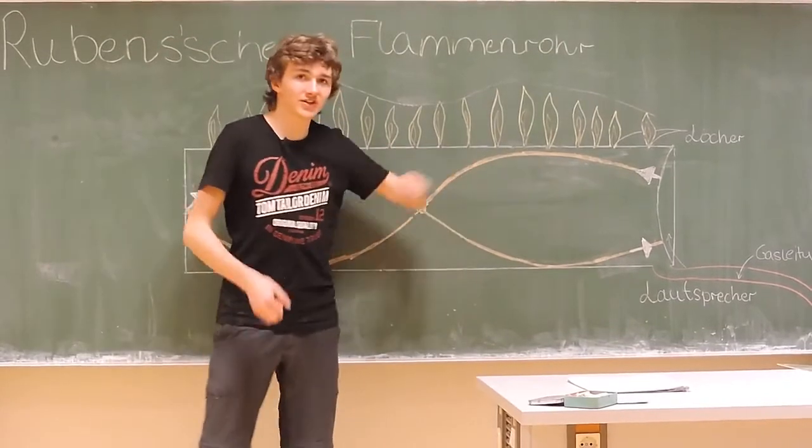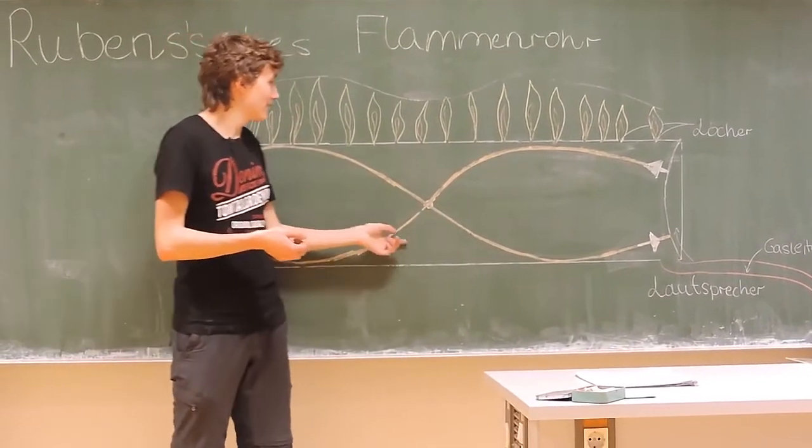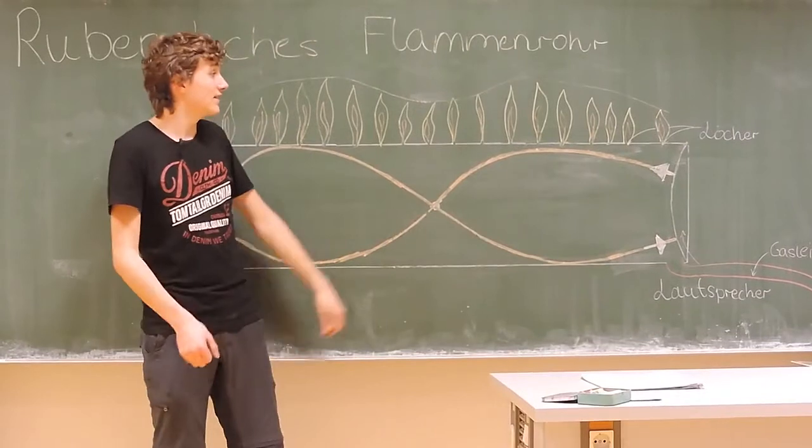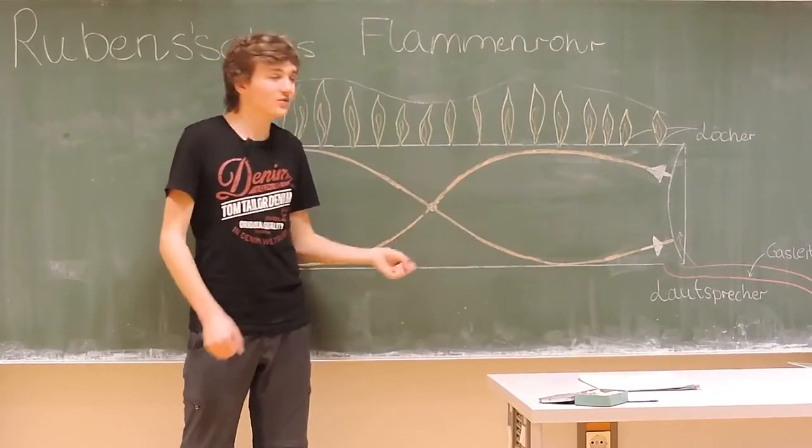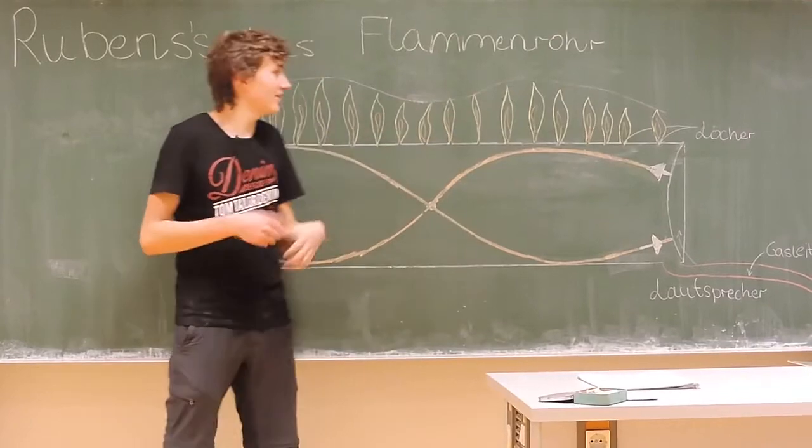In the antinode, there is higher pressure in the tube. That means the gas will be under more pressure, so the flame is higher.